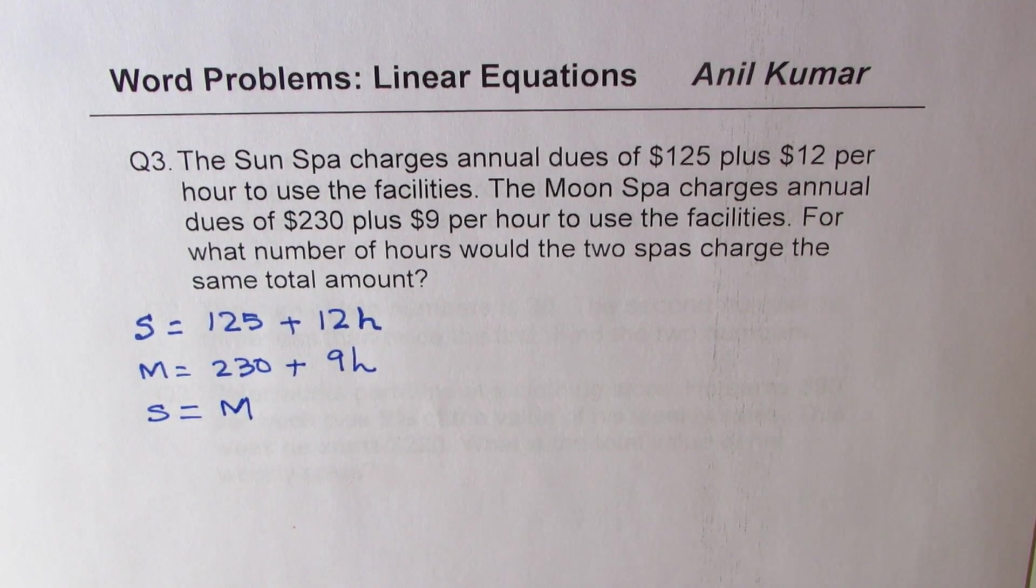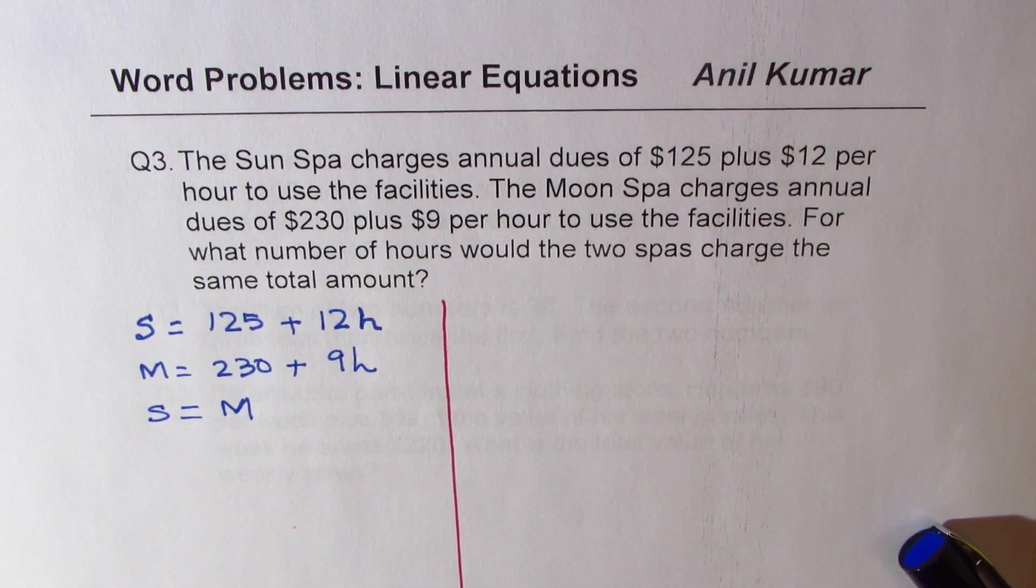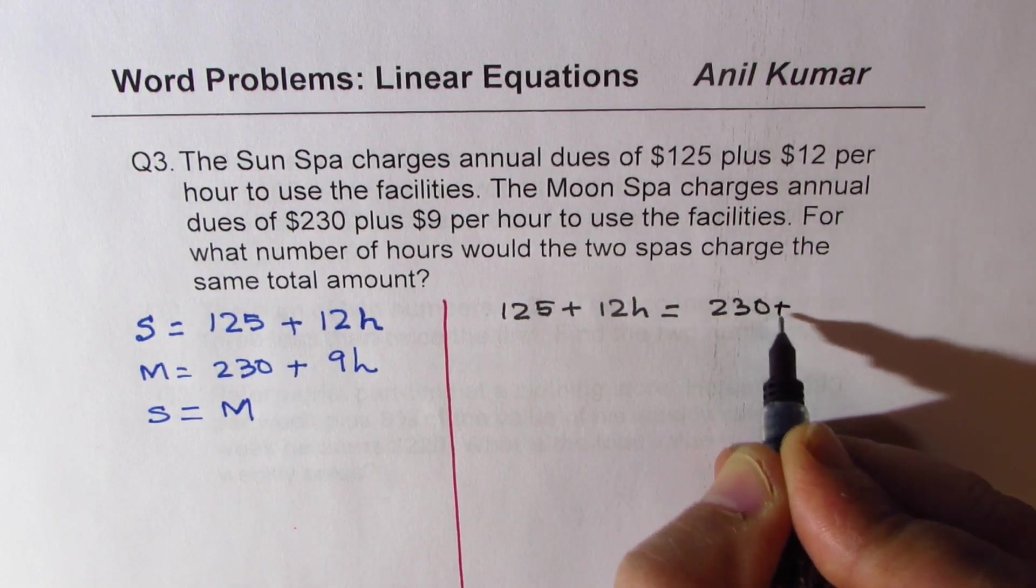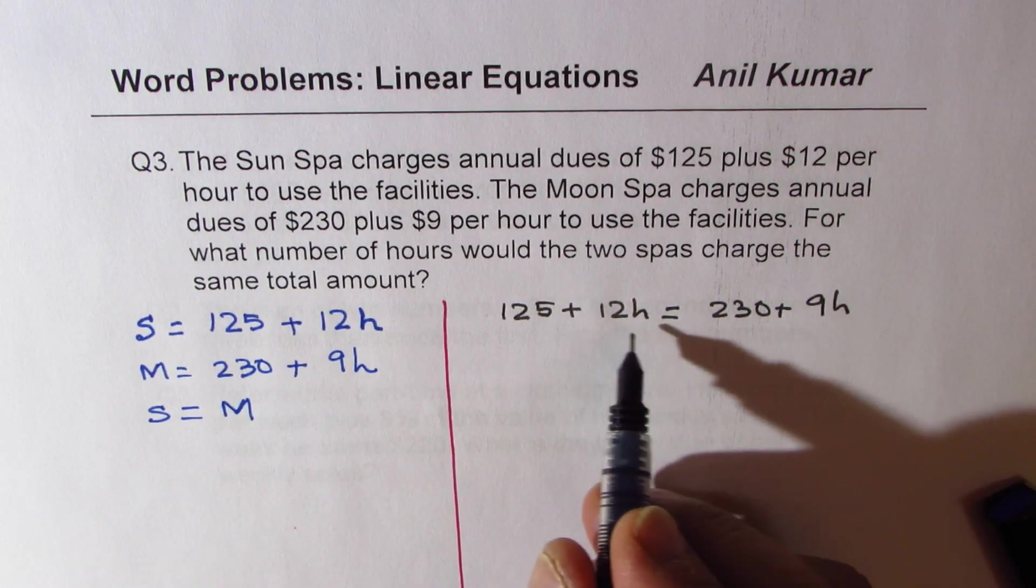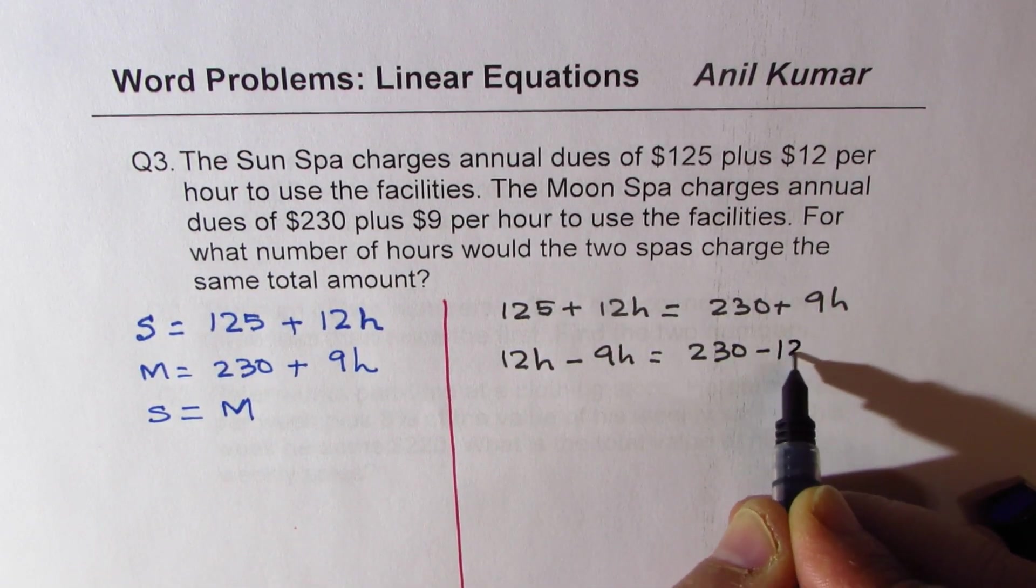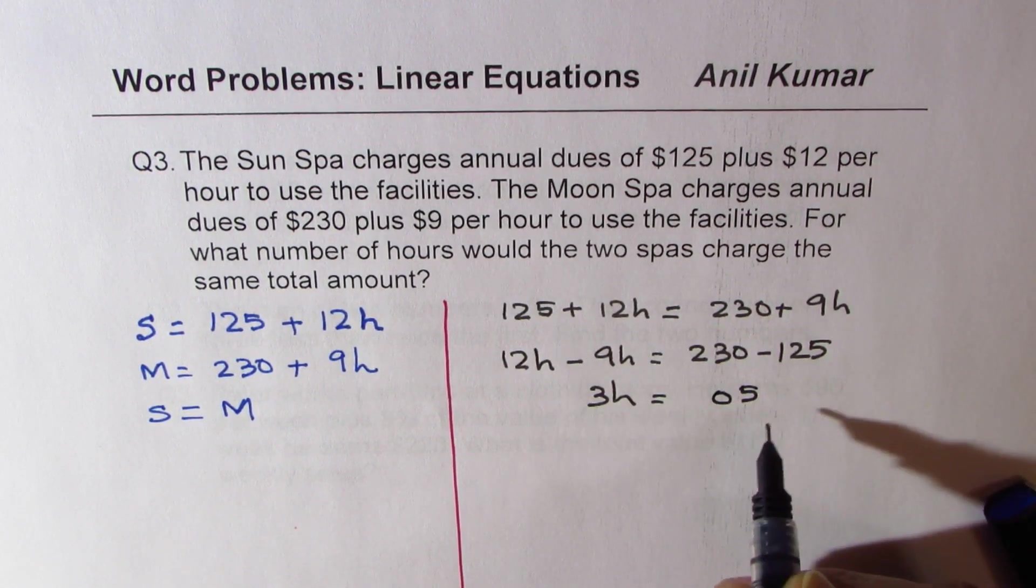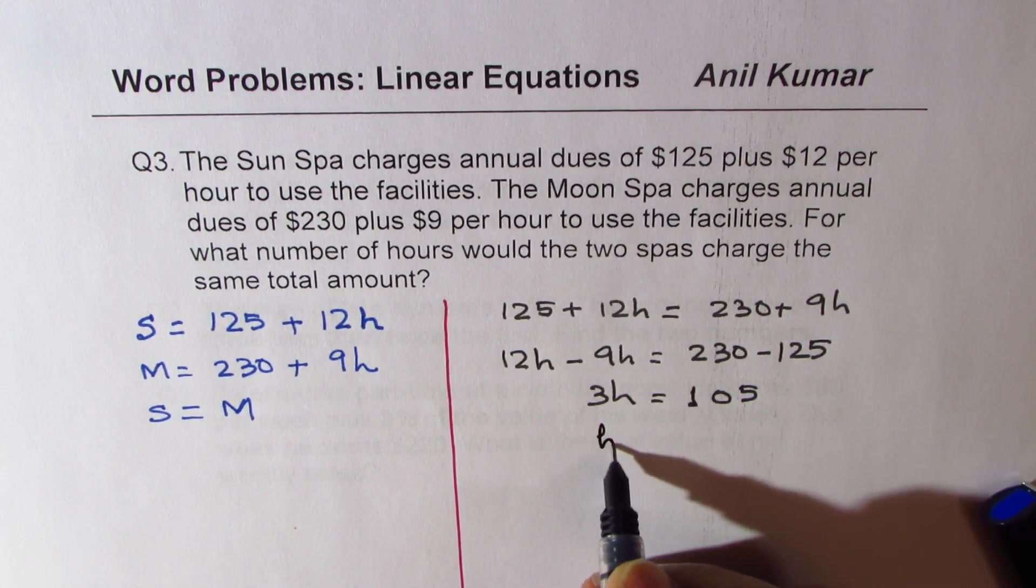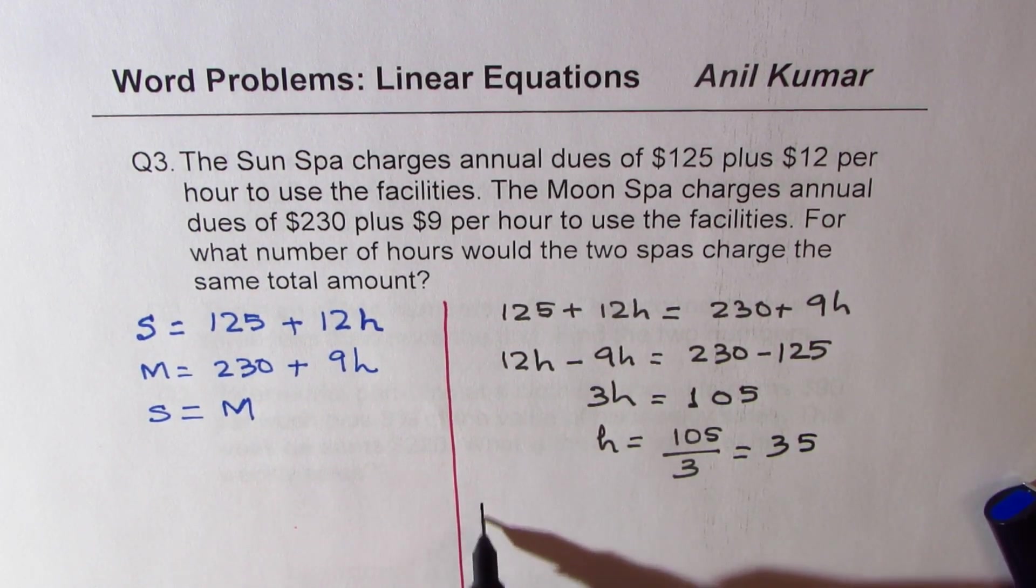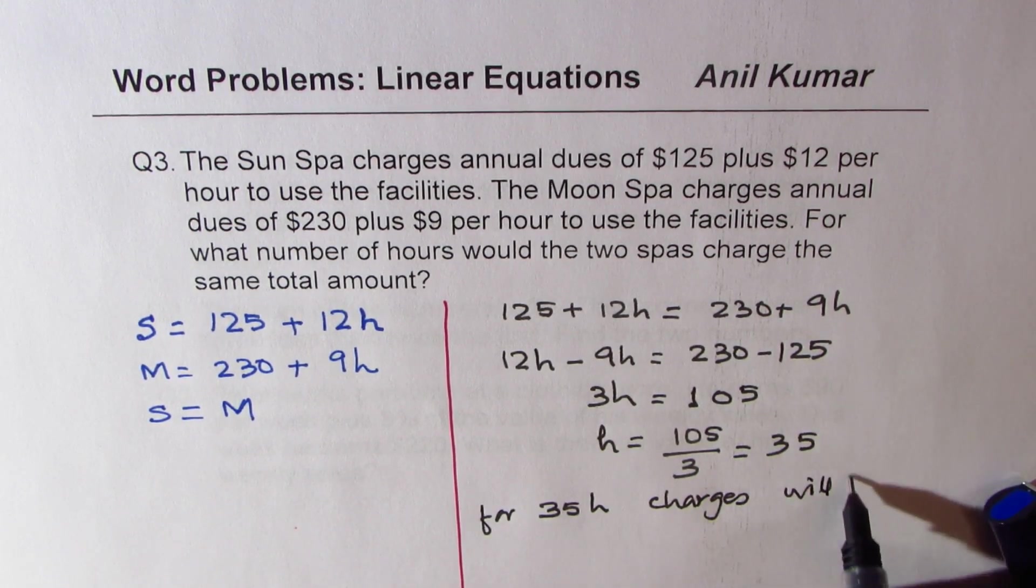That is our equation, which we need to solve. So we'll equate the two and solve for hours. We get 125 plus 12H equals 230 plus 9H. Bring them to the same side. For hours on the left, we get 12H minus 9H equals 230 minus 125. 12 minus 9 is 3, and 230 minus 125 is 105. So hours will be 105 divided by 3. So for 35 hours, charges will be same.